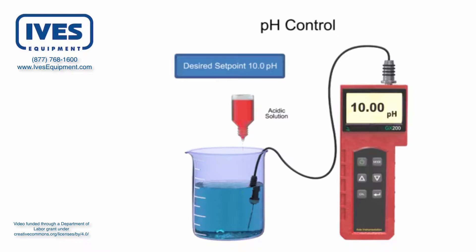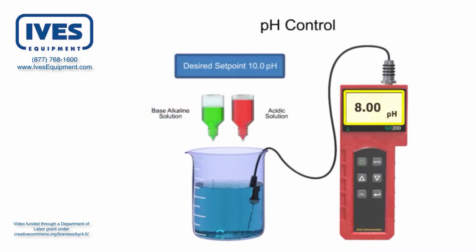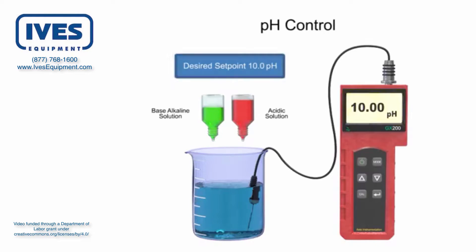When a low alkaline level is detected in the solution, a base is added to increase the pH level. In both cases, the corrective ingredients are called reagents.